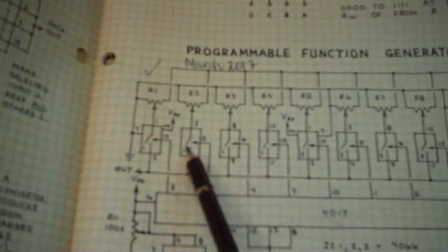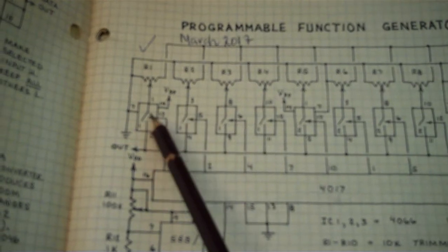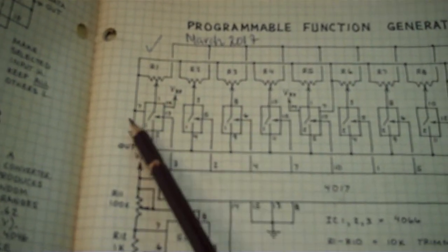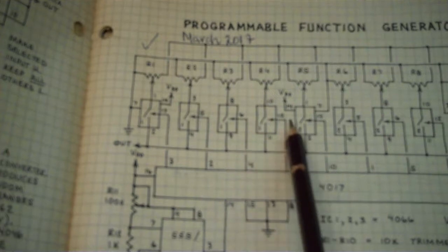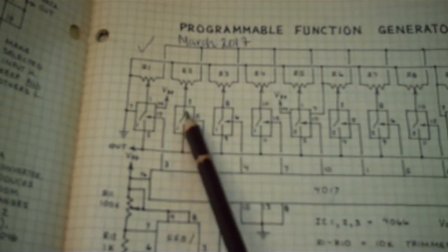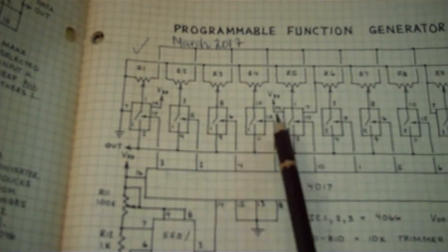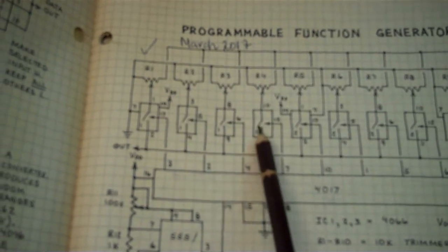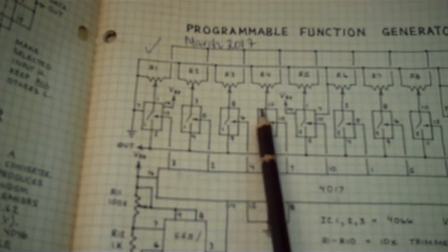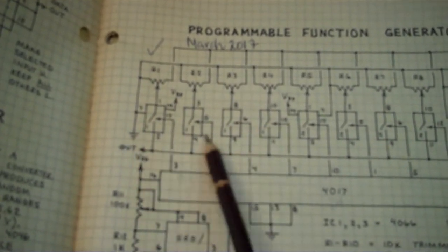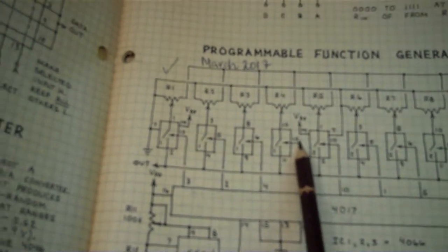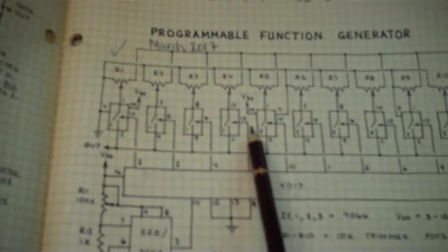And these chips up here, these are 4066 chips. Think of them as switches, because that's how they really are. But they're controlled electronically, as opposed to a physical switch. By the way, there's four switches for now in the 4066, each 4066. So I've got 10 in total, so I needed 2.5 chips.